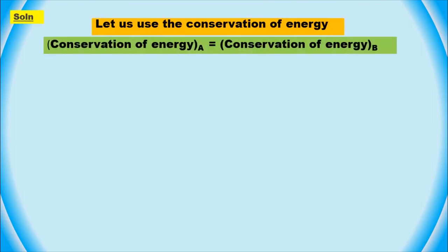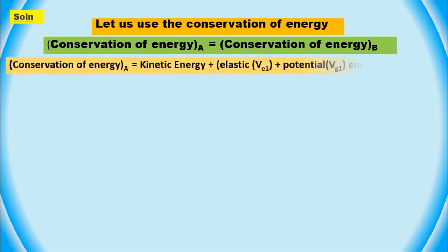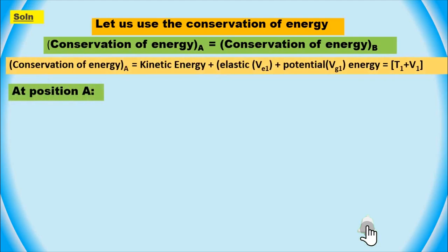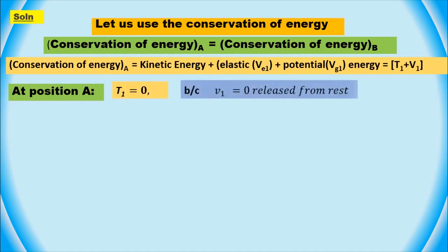To calculate this, let us use the conservation of energy. We can use the equation: conservation of energy at point A equals conservation of energy at point B. The conservation of energy consists of kinetic energy, elastic and potential energy. Kinetic energy is zero at point A because the slider is released from rest, so velocity is zero and therefore kinetic energy is zero.